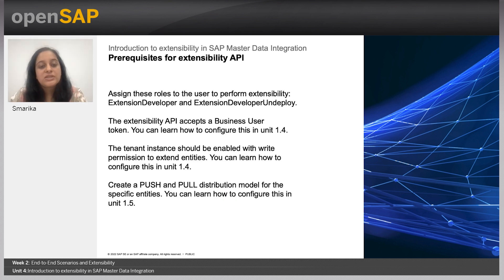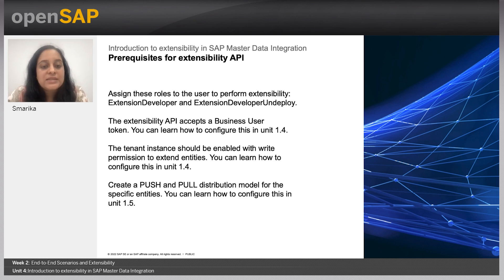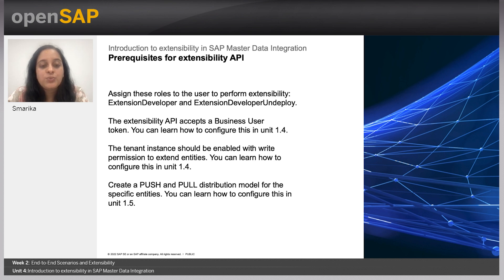The prerequisites for the extensibility API: assign the required roles to the user, for example the 'extension developer' role, which is required for creating extensions. The extensibility API accepts a business user token — you can learn how to configure this in Unit 1.4, which covers authorizations. The tenant instance should be enabled with write permission to extend entities, also configurable in Unit 1.4. Additionally, create a push and pull distribution model for the specific entities, which you can learn how to configure in Unit 1.5.